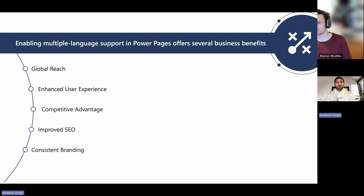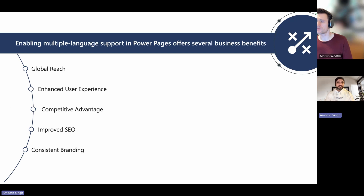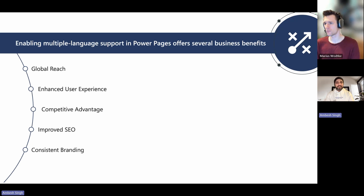Also, you can stand out from competitors by demonstrating a commitment to inclusivity and customer satisfaction. Not only this, you can boost your search engine ranking in different regions by having content available in multiple languages. Maintain a unified content structure while delivering localized content, ensuring brand consistency across different languages. These advantages can help drive growth, improve customer loyalty, and increase overall business success.